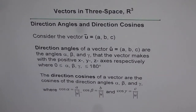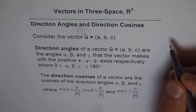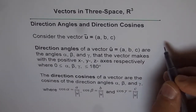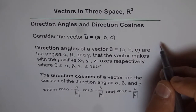In R2, we could give direction with just one cosine, one direction. But in R3, we need three different directions. I'll explain how.